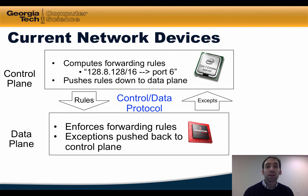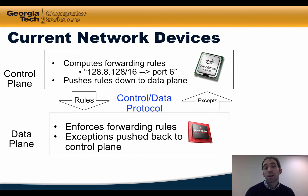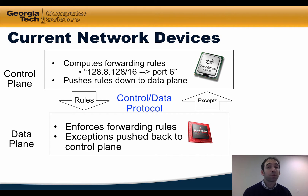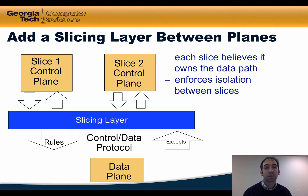As we know from previous lessons, existing SDN controlled network devices are typically controlled from a single control plane that computes forwarding rules and pushes the rules down to the data plane using an agreed upon control protocol. The data plane then enforces those rules, and exceptions can be pushed back to the control plane as they arise.